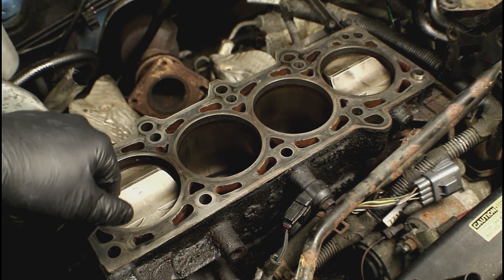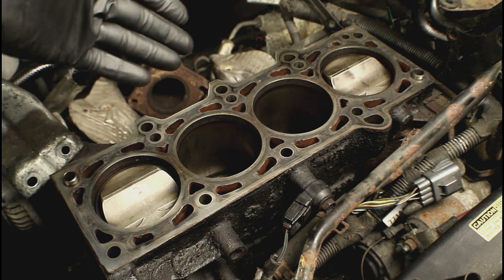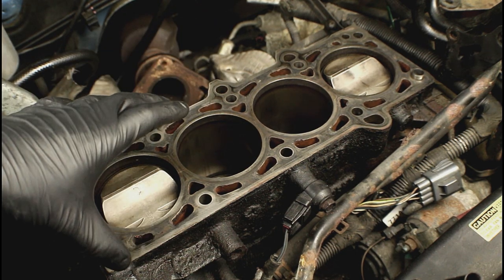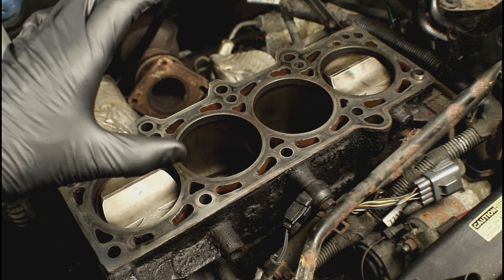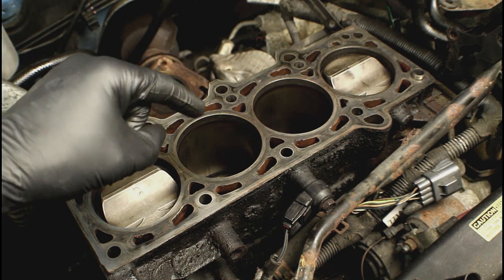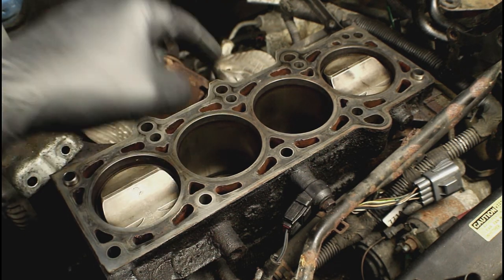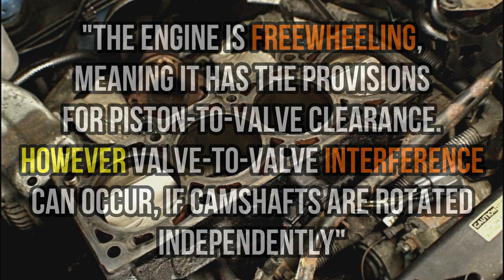So that leads me to the next question: what is the PT Cruiser? Is it an interference engine or non-interference engine? And if it's an interference engine, does the exhaust get bent by the piston or do they get bent by the valves? What I'm going to do is read you word for word from the service information what Chrysler states this engine is. The engine is freewheeling, meaning it has the provisions for piston to valve clearance. However, valve to valve interference can occur if camshafts are rotated independently.